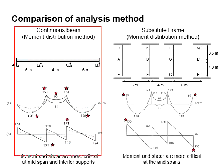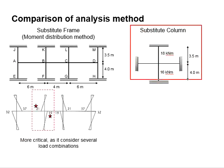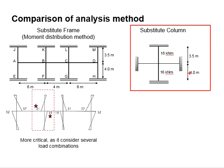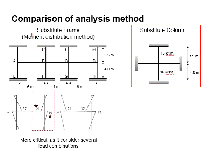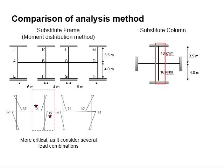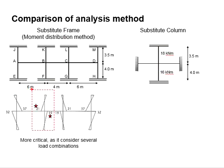The continuous beam method is unable to determine the moment acting on the column. To determine the column moment, we normally calculate from a substitute column. The largest moment acting on the column is determined by the maximum load at the longer span and minimum load at the shorter span — found to be 18 kNm for the upper column and 16 kNm for the lower column. In comparison, the frame analysis demonstrates a higher degree of moment at the upper and lower columns.